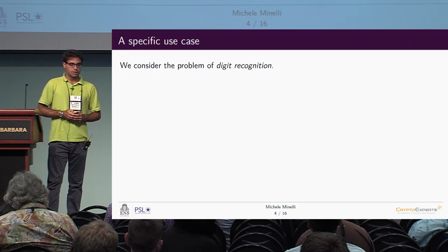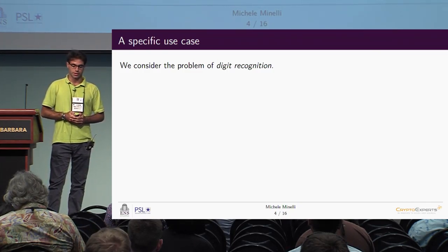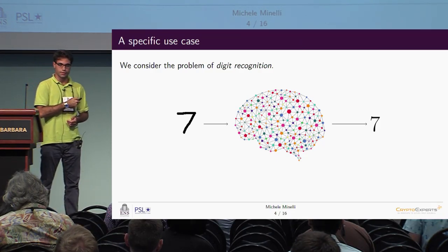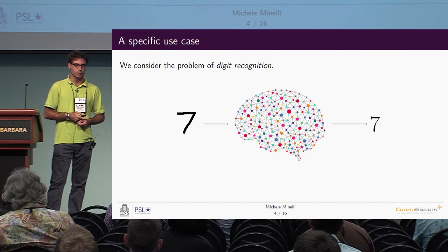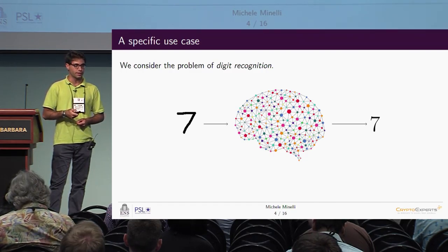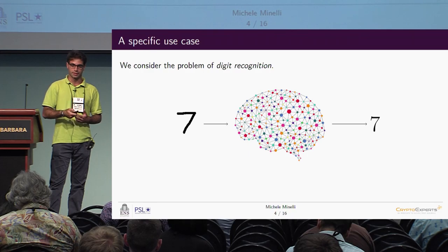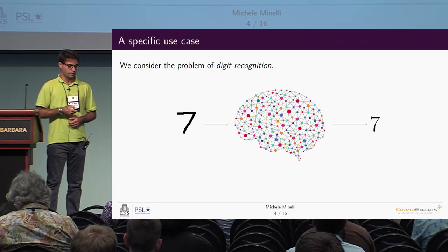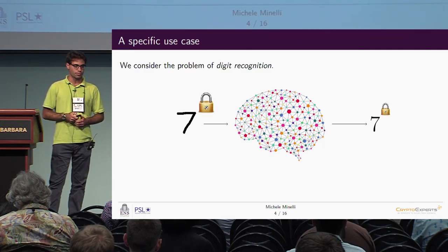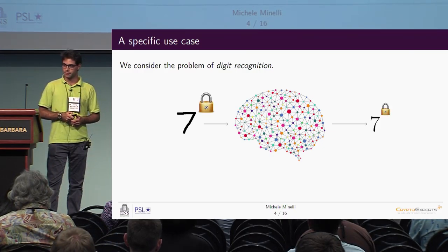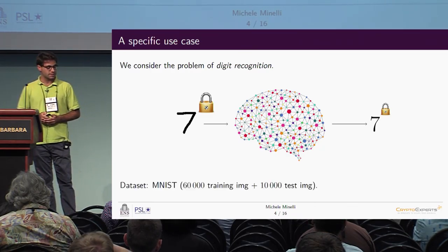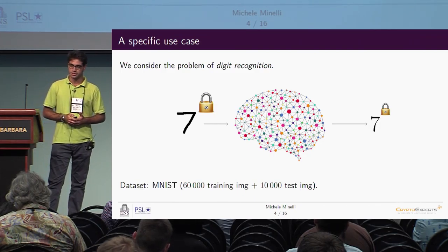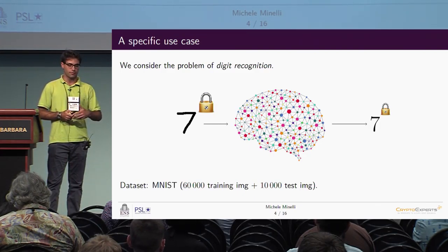In this work, we consider as a specific use case the problem of digit recognition — we will have a picture representing a handwritten digit, given to our model, and the model will predict which digit is depicted. We will do everything homomorphically, meaning we start with an encryption of an image and recover an encryption of the predicted label. As a dataset, we use the common MNIST dataset, which contains several thousands of images of handwritten digits.